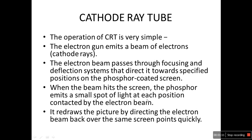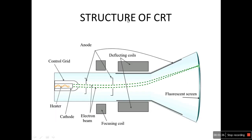When the beam hits the screen, the phosphor emits a small spot of light at each position contacted by the electron beam. It redraws the picture by directing the electron beam over the same screen points quickly — again and again it quickly passes the beam and redraws the picture. This is the structure of CRT.